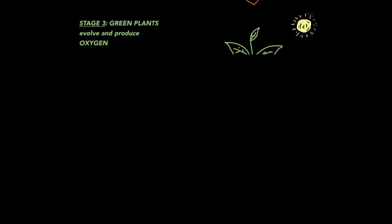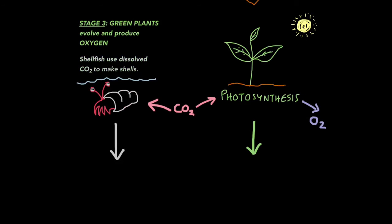Stage three, and we're really sort of jumping ahead here, but green plants evolved and they produced oxygen. It's quite a common exam question when they ask you to describe the process that reduced the levels of carbon dioxide in our early atmosphere. You would say that green plants evolved and they carried out photosynthesis, which takes in carbon dioxide and releases oxygen. The carbon dioxide that made it into the oceans was taken in by sea life or shellfish, and that's where they made their shells, which contains carbon in the form of calcium carbonate.